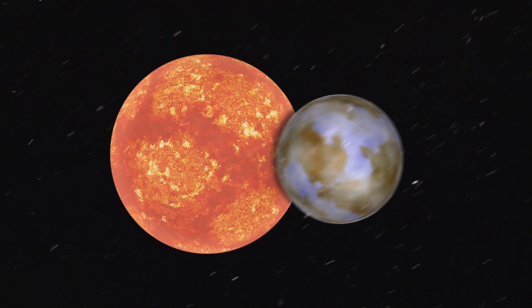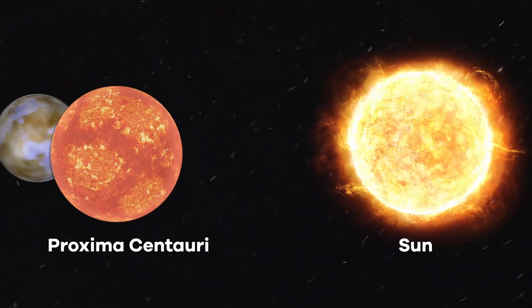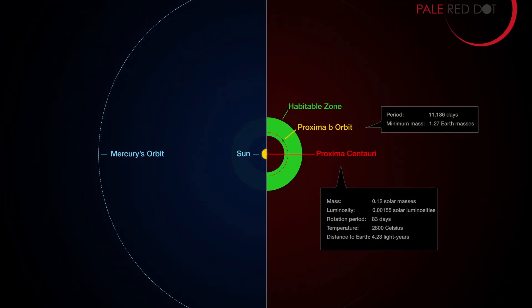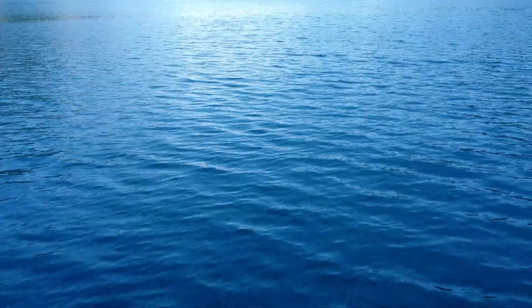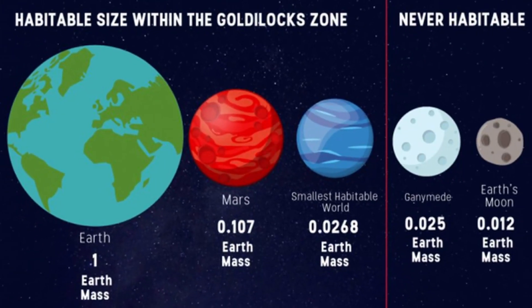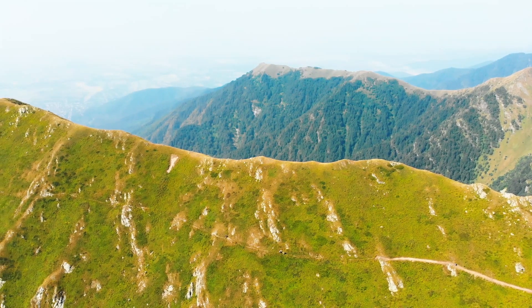This peculiar alien planet orbits Proxima Centauri, our Sun's closest neighbor. Its location within the habitable zone suggests the possibility of liquid water and perhaps even the existence of life. Due to its Earth-like mass, scientists believe that Proxima b could be a rocky terrestrial planet similar to Earth.